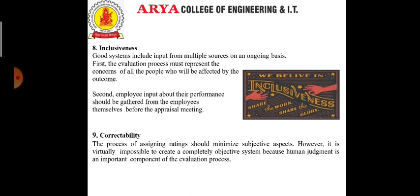The next characteristic is correctability. The process of assigning ratings should minimize subjective aspects. However, it is virtually impossible to create a completely objective system because human judgment is an important component of the evaluation process. Therefore, the system should also allow for some subjectivity so that managers or supervisors can correct the process where needed.